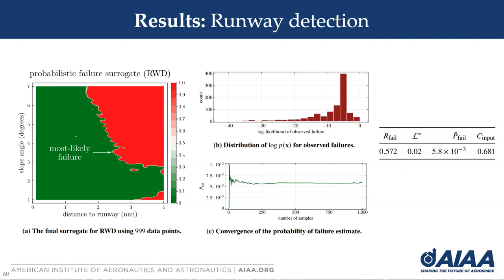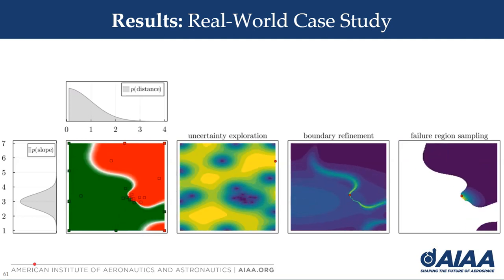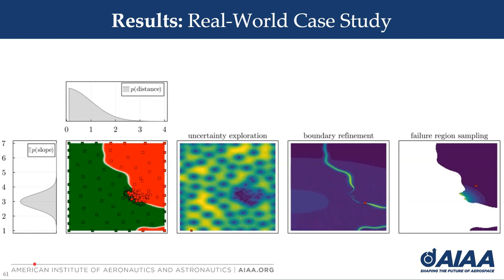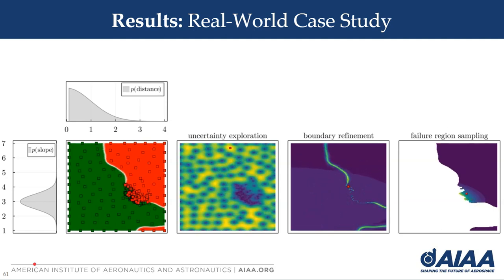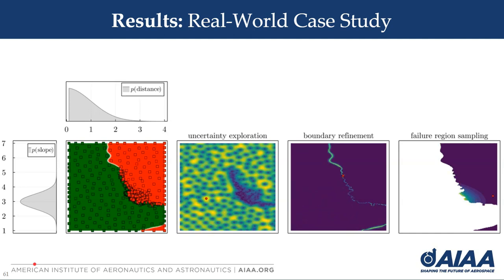Looking at the safety validation metrics — those we can compute without access to truth — out of 999 samples, about 57% ended up in failure. We provide good coverage of the input space and compute the estimated probability of failure as 5.8 times 10 to the minus 3. If we instead sampled directly from the operational model p, we would expect about 6 out of those 999 points to lead to failure, instead of about 571 failures found using Bayesian Safety Validation. The animation of all 999 iterations shows it starting by exploring uncertainty and refining high-likelihood decision boundaries, then extending boundary refinement across the entire failure boundary, while also sampling from the failure region to produce more likely failures and refine that distribution — ultimately computing an accurate estimate of the probability of failure.